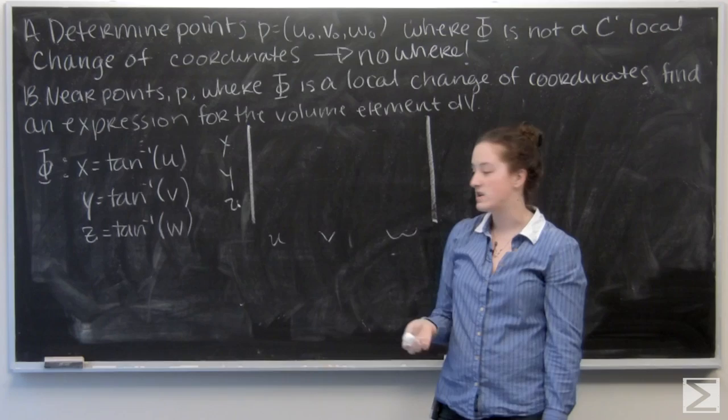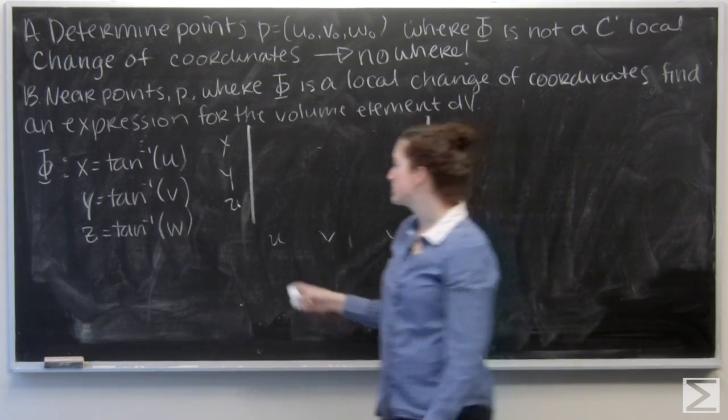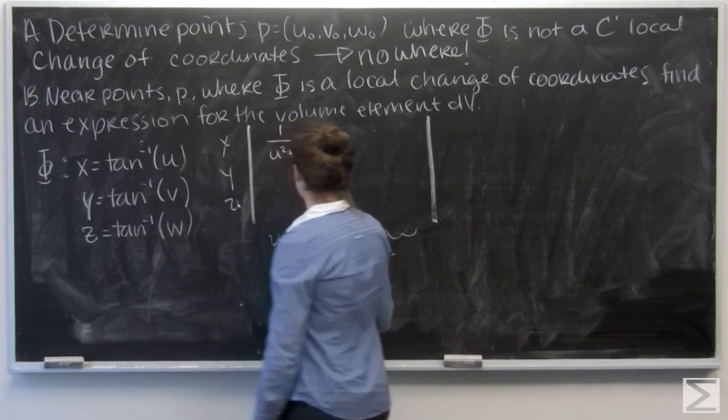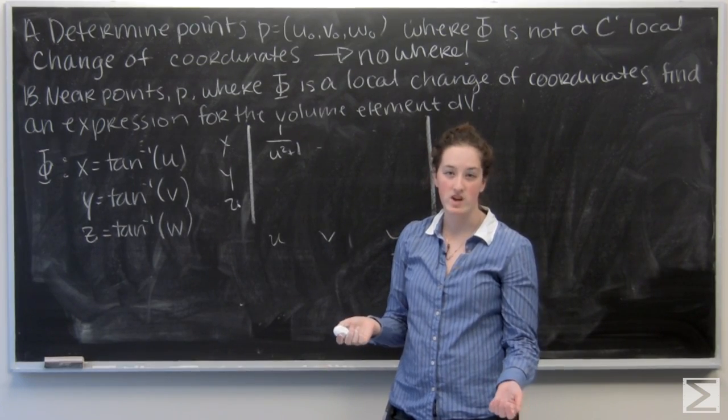So first let's do arctan u. The derivative with respect to u is going to be 1 over u squared plus 1. And then for v and w, it just acts like a constant. And then the derivative of a constant is going to be 0.